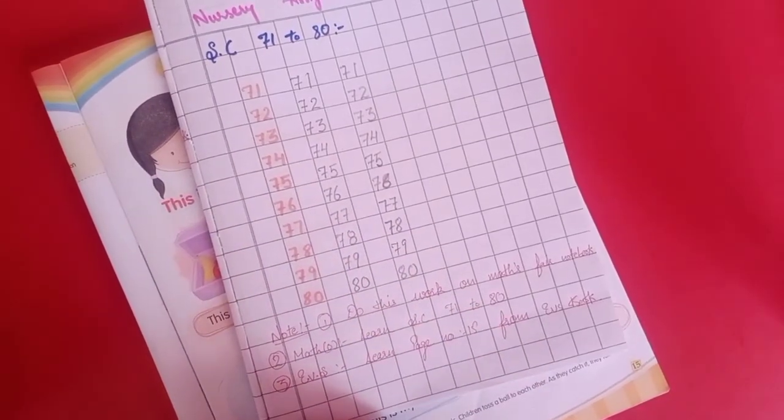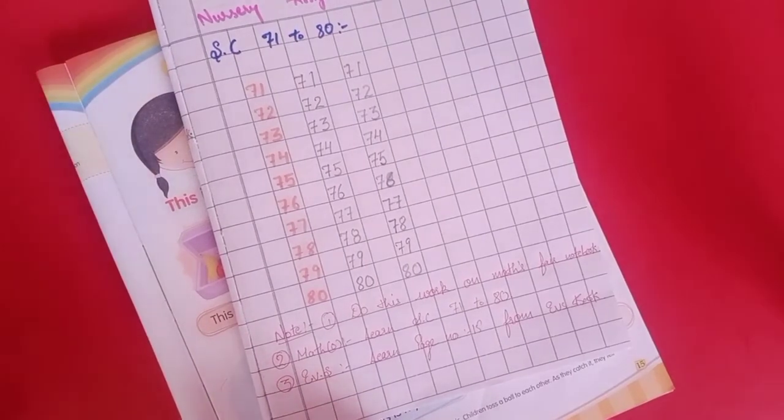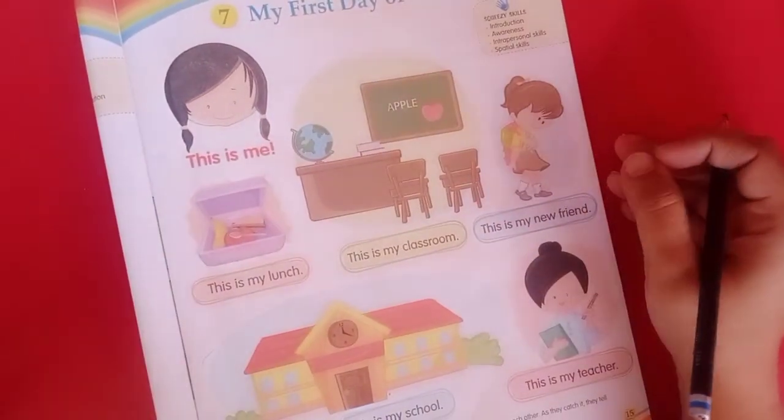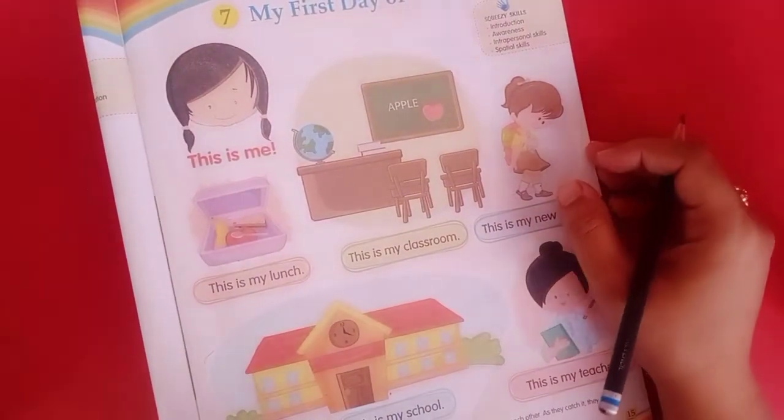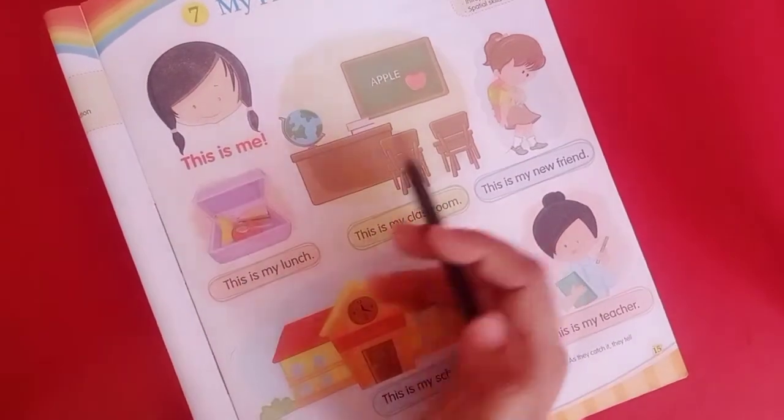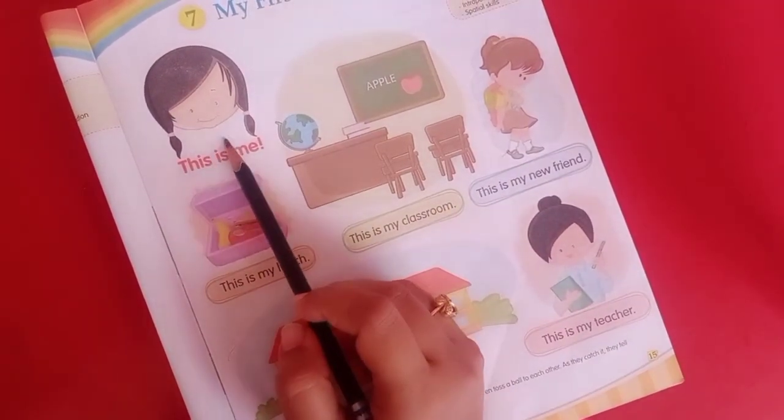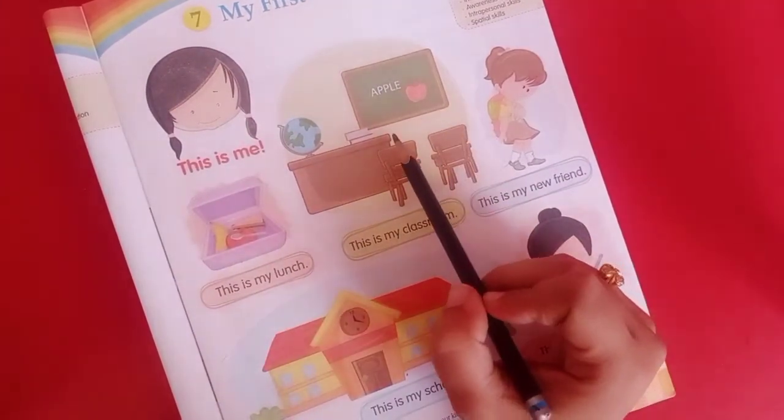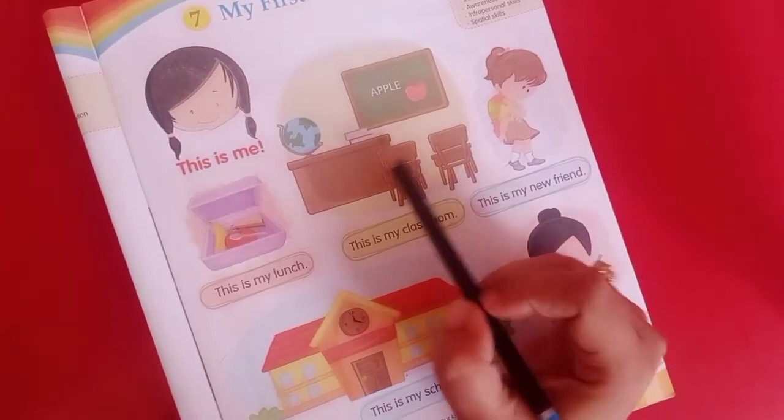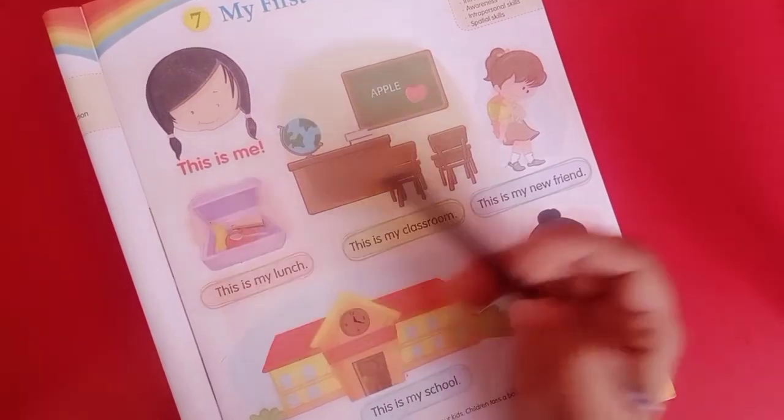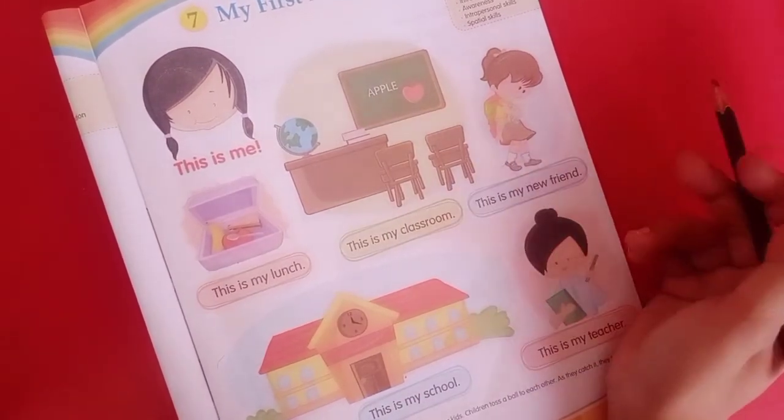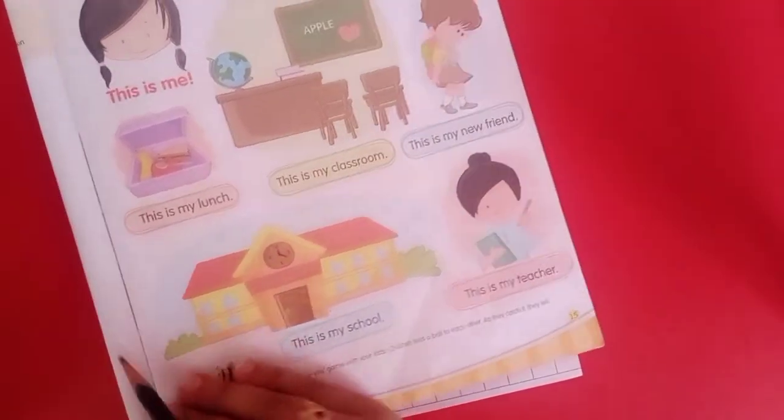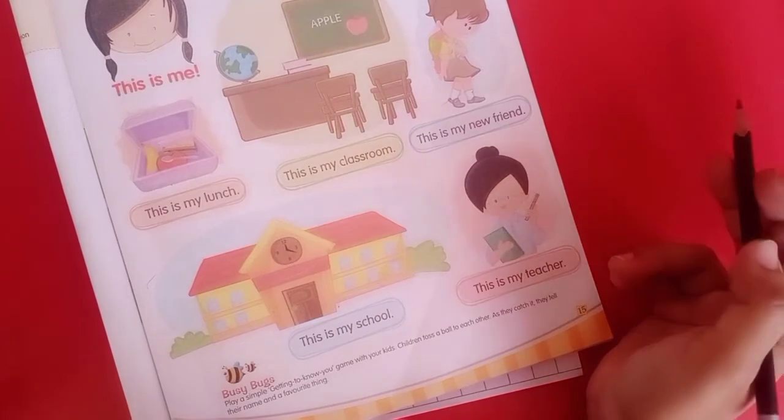Now we will do EVS page number 15 from Bouncing Bear, that is 'My First Day of School'. Let us revise: This is me, this is my classroom, this is my lunch, this is my new friend, and this is my school, and this is my teacher.